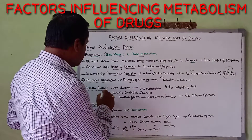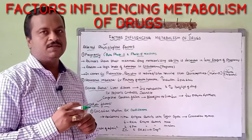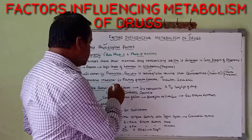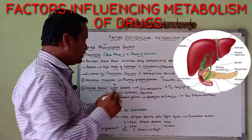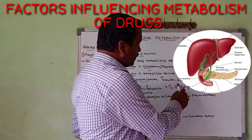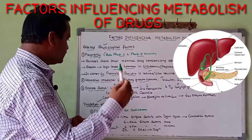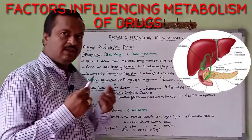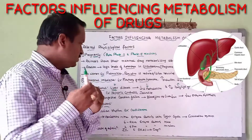Next comes the third one: disease status. As I discussed in the earlier video, any disease affects absorption, distribution, metabolism, and excretion with respect to the particular organ. Particularly we are discussing metabolism with respect to the liver. Liver is the major organ for metabolism. Any disease which occurs in the liver naturally decreases metabolism, and automatically the half-life of the drug increases — meaning accumulation of the drug in the body increases. For example, hepatic cirrhosis: in that condition the enzyme activity reduces, thereby the metabolism rate also decreases.